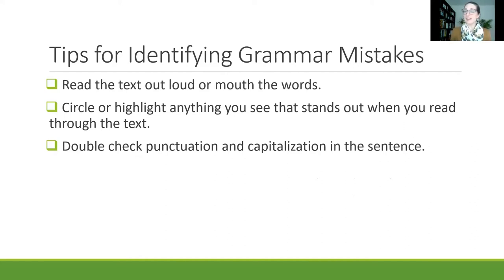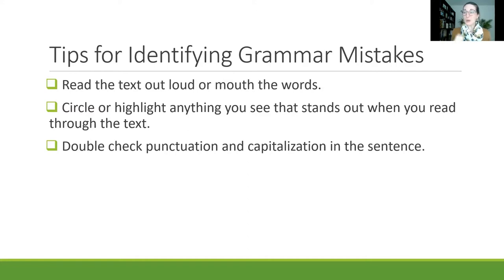You can also circle, highlight, or just write down anything that you see that stands out when you read through the text. A full text will be provided first, and if you see anything that doesn't sound right, feels a little out of place, or maybe some punctuation that doesn't seem right, you can circle or highlight that on a paper test or just make a note on the page. That's going to help because it's good to know what your gut instinct is when there's something a little off that you'd like to change.